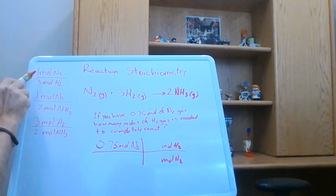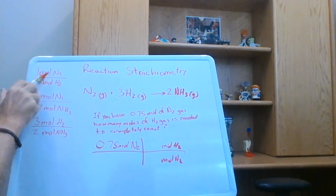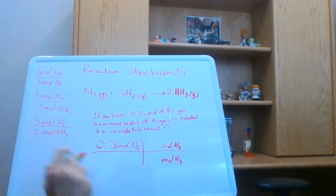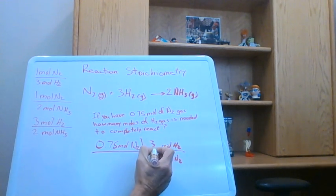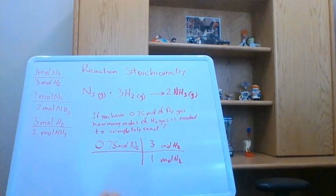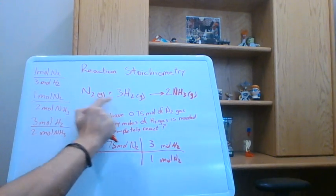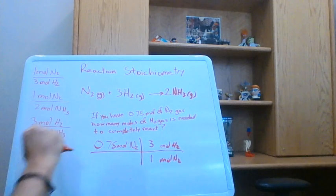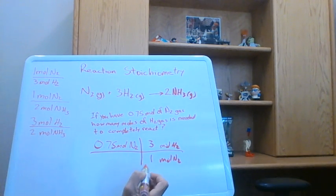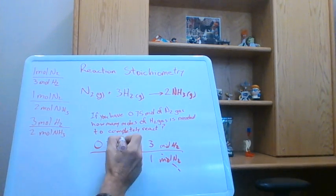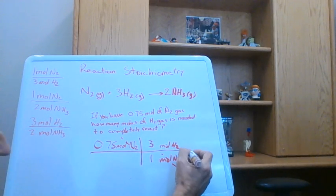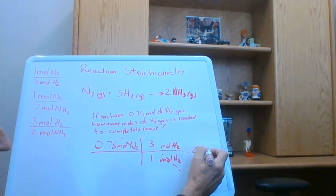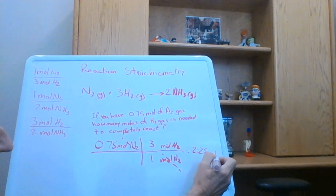And you can see here that one of our conversion factors says there's one mole of N2 for every three moles of H2. So there are three moles of H2 for every one mole of N2. And we're getting that from our balanced equation. We need three H2s for every one N2 in our reaction. So our moles of N2 are going to cancel and it's going to leave us with moles of H2. And this would be 2.25 moles of hydrogen.